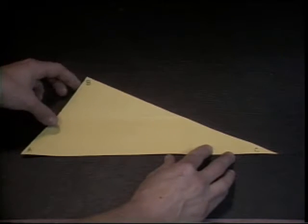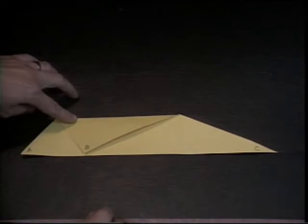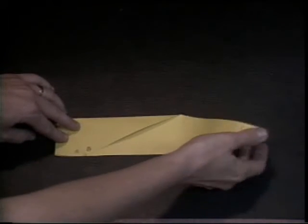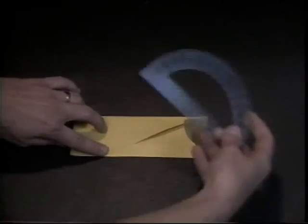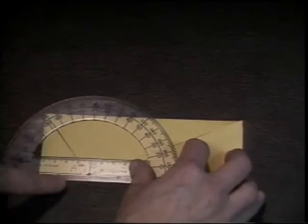First we will fold vertex B so that it is on sideline segment AC. Then fold vertices A and C over to meet at point B. Then, using the protractor, we will see that the three angles together measure 180 degrees.